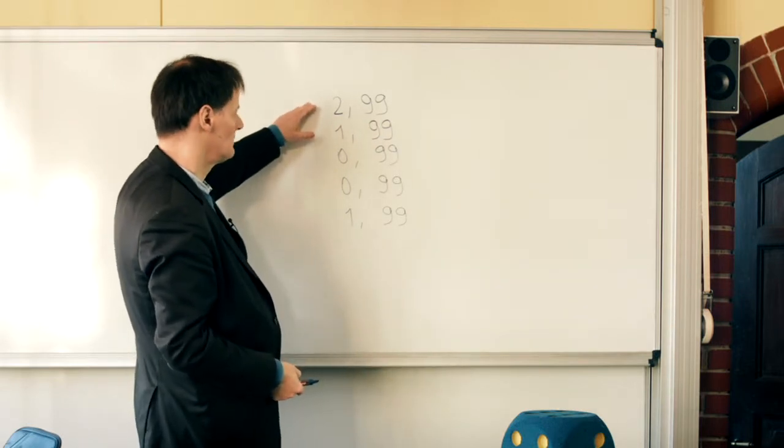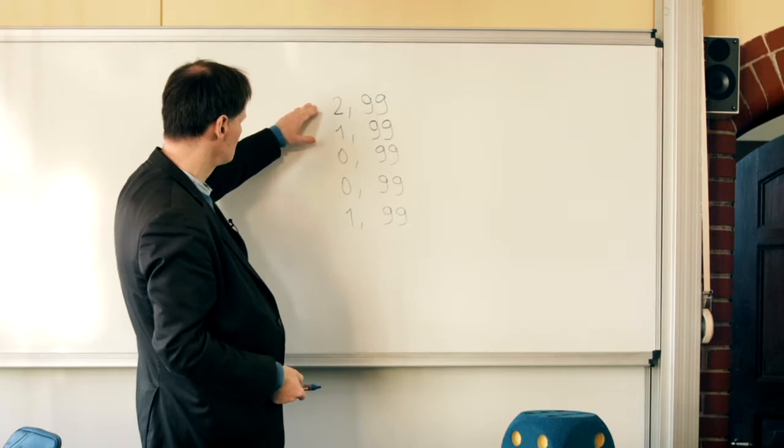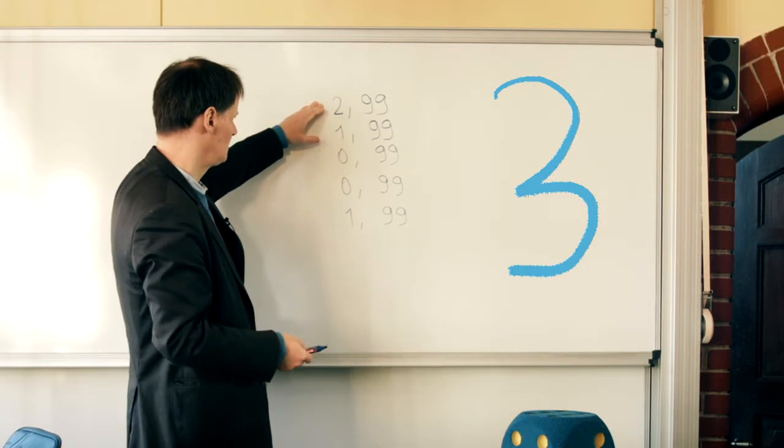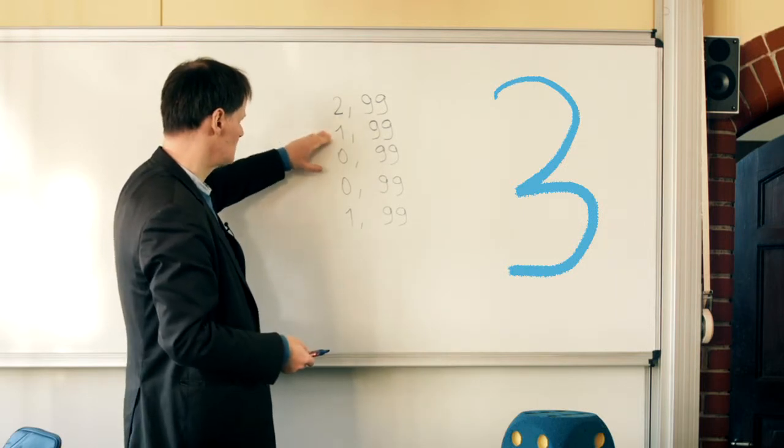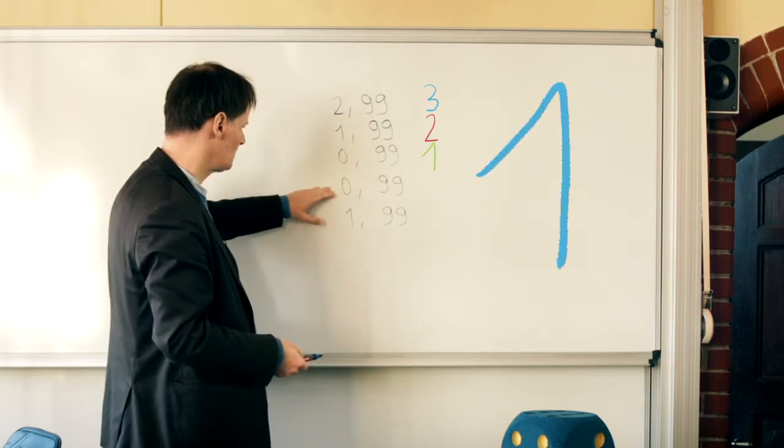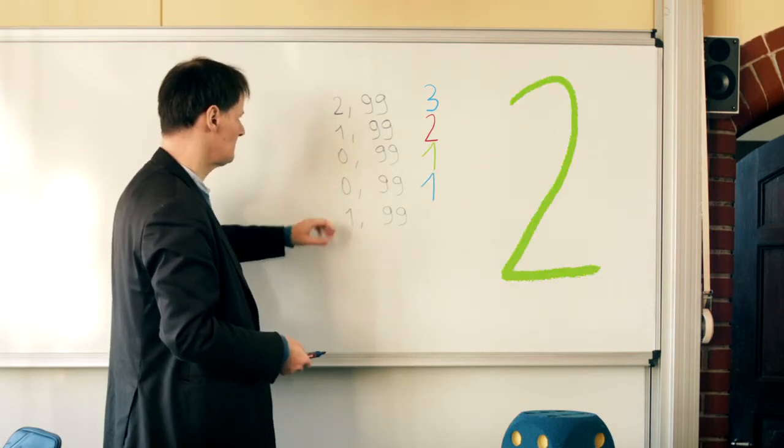Now round up all the amounts to the nearest dollar. 2.99 becomes 3 dollars, 2 dollars, 1 dollar, 1 dollar, 2 dollars.